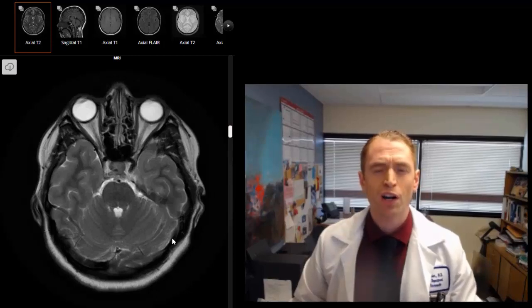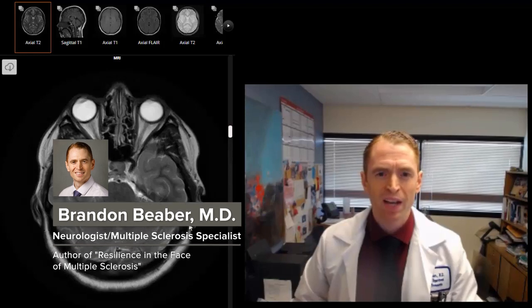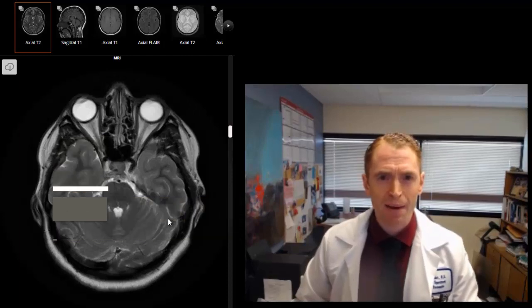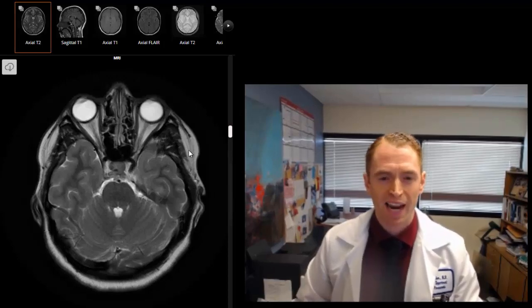By request, this is a video on normal anatomy of the brain as seen on an MRI scan. I'm going to point out some anatomical features and clinical correlates. If you have any questions about the anatomy, please post in the comments below and include the time of the video where I show it, and I'll try to answer your question as best as I can.